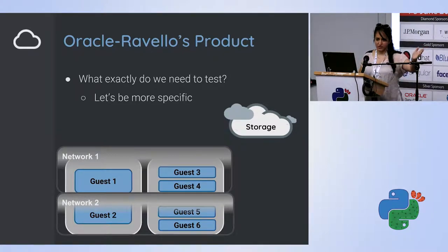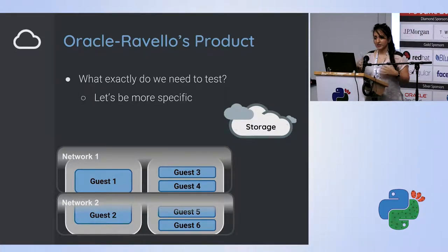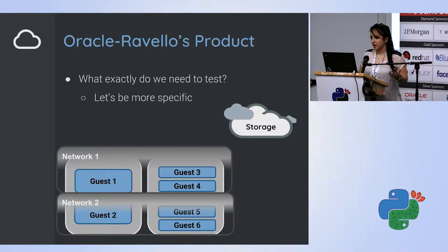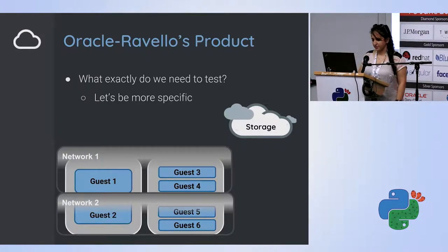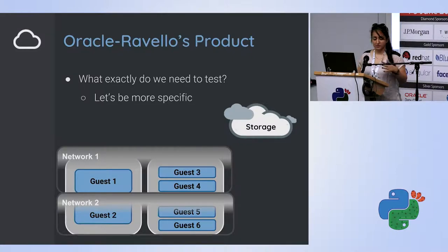As you can see on the screen right now, I could have all my guests in one network subnet, or have them divided between several networks, differing between cloud instances in any way you could imagine. We have a lot of different variations that we want to test and we want to run them smoothly everywhere — on every cloud, in every configuration. This is a big challenge. Let's talk about what our testing requirements really are.